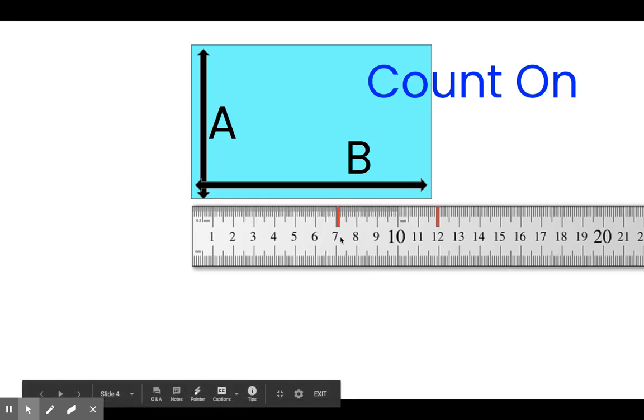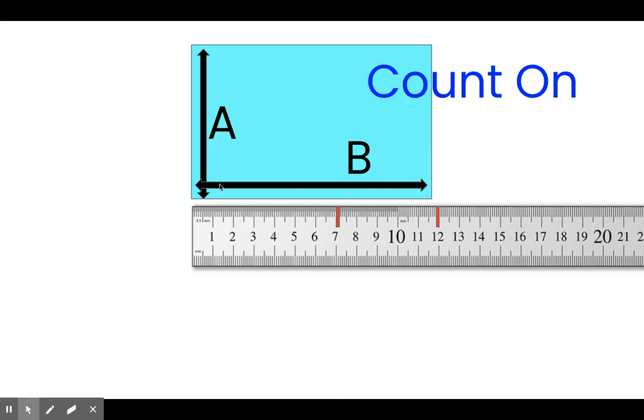We start at the number 7, and we're going to count on until we reach 12. We start at 7 because that was the length of the shorter side, side A. And we're going to count on until we reach 12 because that was the length of the longer side, side B. Here we go. Are you ready to count on with me? Let's do it. 1, 2, 3, 4, 5, 8, 9, 10, 11, 12. We just counted on from 7 to 12. We took 1, 2, 3, 4, 5 jumps on our centimeter ruler to get from 7 to 12.